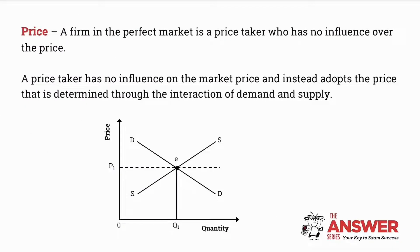The next characteristic we are going to consider is the price. An individual producer is considered to be a price taker. A price taker is one that has no influence on the market price and instead adopts the price that is determined through the interaction of demand and supply. If we look at our demand curve and supply curve and the point of intersection — the equilibrium point — that is where the equilibrium price will be formulated, and this is the price that the firm will adopt.